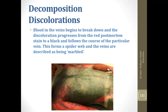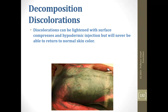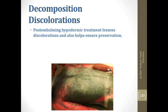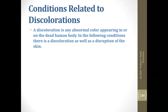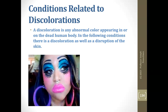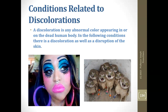The spider webbing is known as marbling. You can lighten these discolorations but they are never going to go back to normal. Surface compresses and hypodermic injection are the way to go — especially on the walls of the abdomen. Make sure you're doing hypodermic injection in all areas with really bad decomp, because if you don't, the skin may be superficially preserved but the underlying tissue will continue to rot. Treat those abdominal walls as you would in an autopsy.